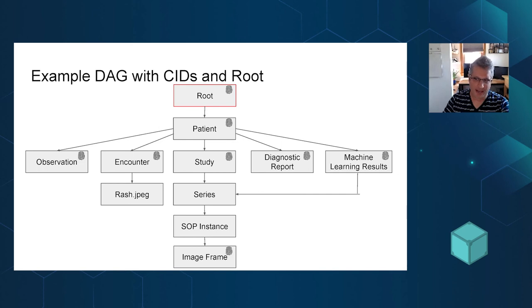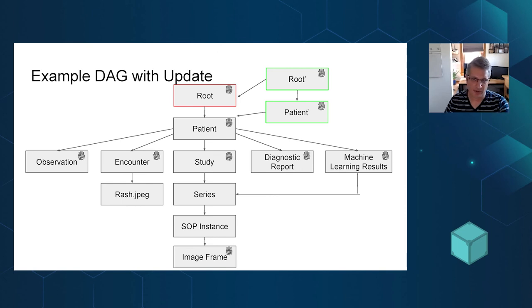And this gives me essentially change tracking in a longitudinal sense where as changes to the patient record occur, I can record that and basically generate a new root. So in this case, I've maybe changed something in the patient demographics, like the name's changed. I would generate a new block, IPLD object if you will, with a new CID, a new root.